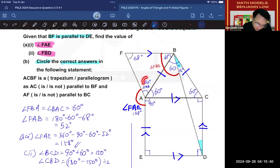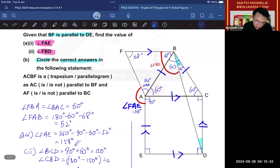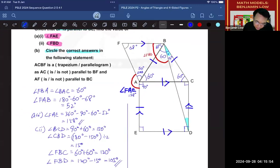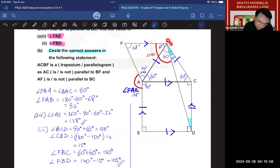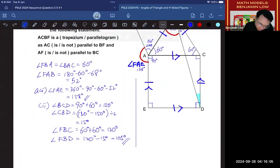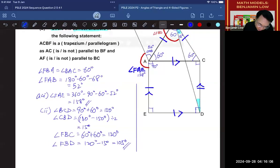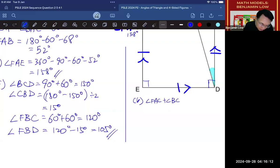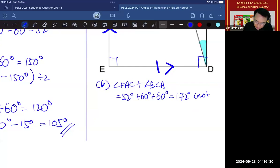So, let's try it out. You can see 52 here. You can see 60 here. And you can see 60 here. And if you were to add up these three numbers, you will not get 180 degrees. But let's write that down. So, we're going to say angle FAC, this is FAC, plus angle BCA. This one is part B. So, angle FAC, plus angle BCA, is equal to 52, plus 60, plus 60, which will give me 172 degrees. And this is not 180 degrees.